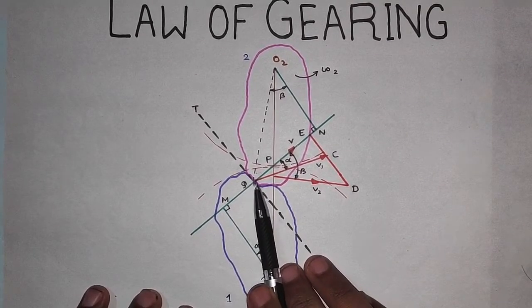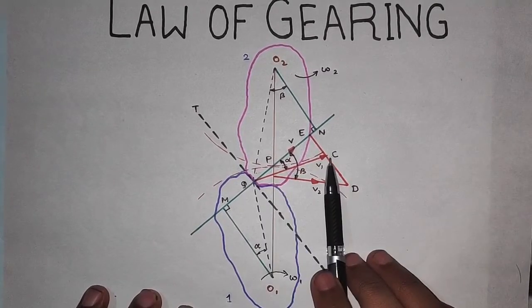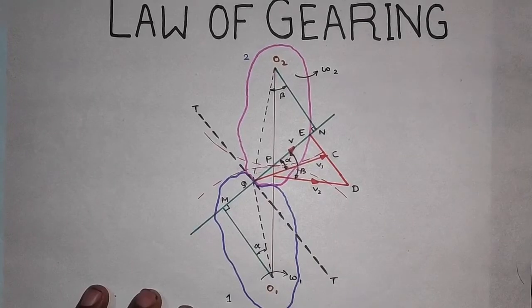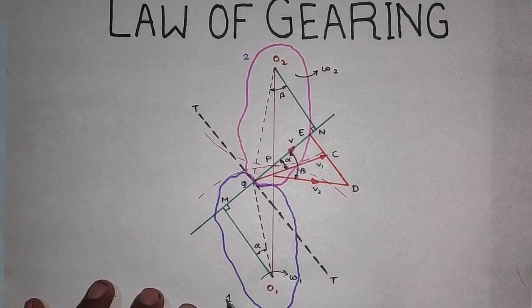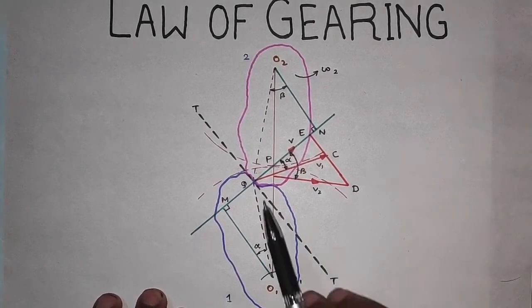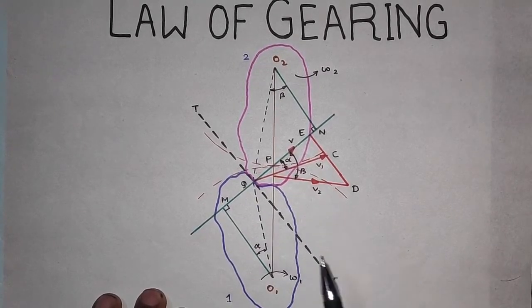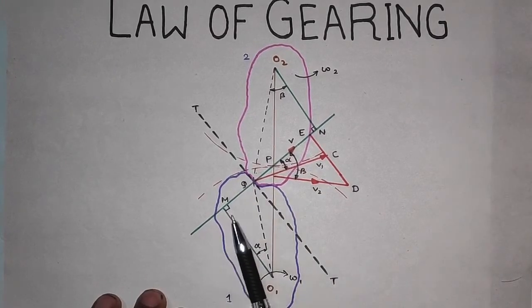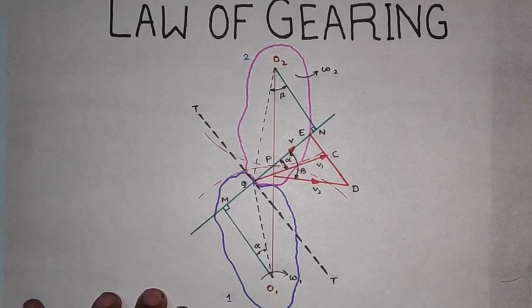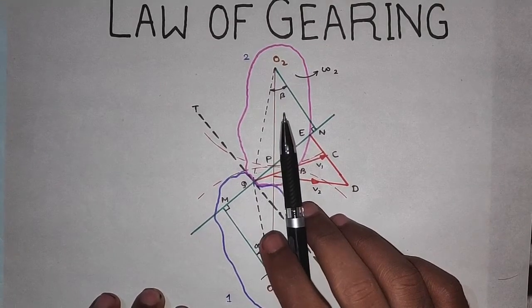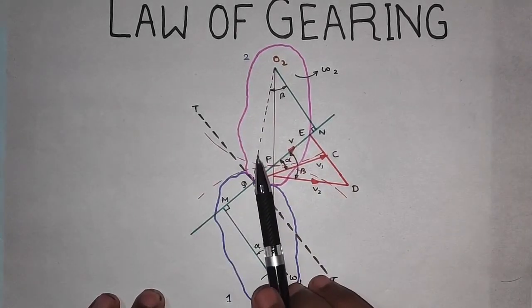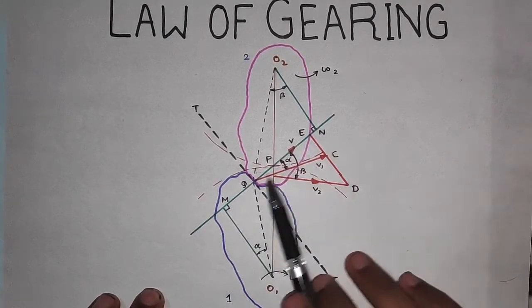Now consider that point Q moves in the direction QC, as shown by the direction vector. This point Q moves in direction QC as the point on the pinion moves due to the clockwise rotation of gear one, the pinion. The point on gear two moves in the direction QD, since that gear rotates with center O2.